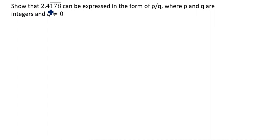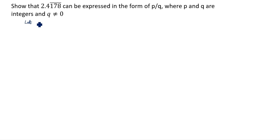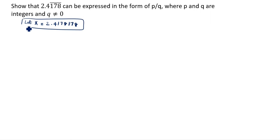Next problem: show that 2.4178 bar — where three digits 178 are repeating — can be expressed in the form of p by q where p and q are integers and q is not equal to zero. Let x equal to 2.4178178..., and this is the first equation.